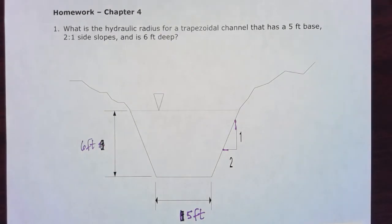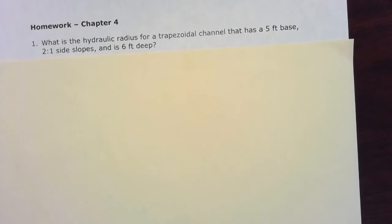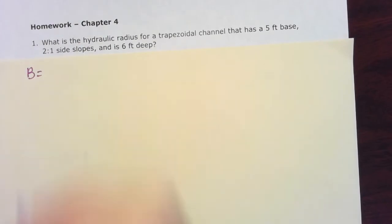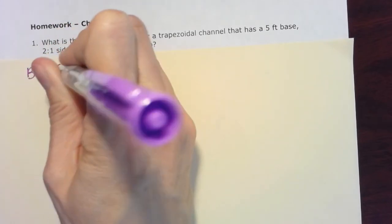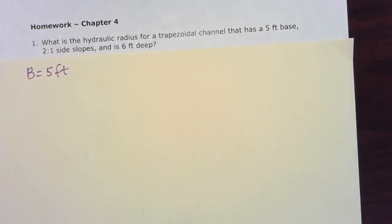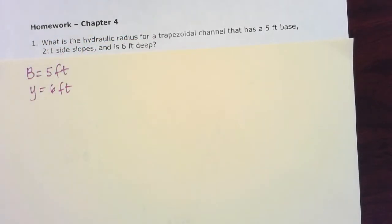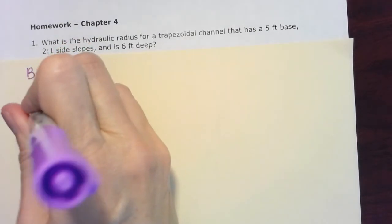I'm gonna put this on another page here so I can work this out. So in this case, my variables are: my bottom width of my channel, which I'm gonna call B, has a five foot base, so that is my B. I know it's got a depth of flow of six feet. And then it has the two to one side slope, so that two becomes my M.